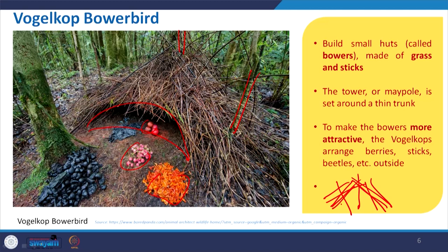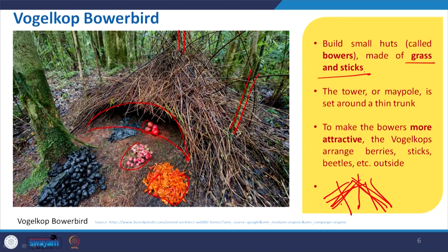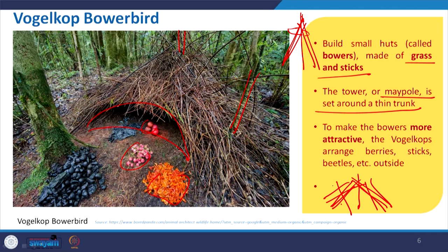Normally in this case, the male bird builds this structure and makes it attractive to communicate with its mate. This is a structure built by a bird with real effort and time — it is made of grass and sticks. We can match this structure with the teepee structure, where different sticks are tied up and a membrane-like material is put on top to protect it. They make the structure around a thin trunk and make it attractive.